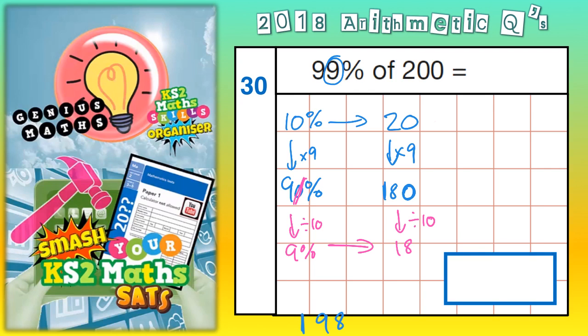Now, basically what we need to do then is say, well, hang on, to get 99%, this 99% is 90% plus 9% to make 99%. We just worked out that 90% is 180, which is that answer, and 9% is 18. So it's basically 180 plus 18.